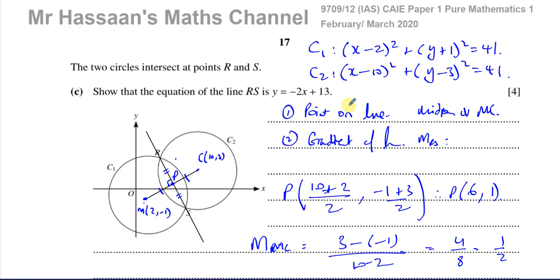That completes this paper, the February-March 2020 International A-Level Cambridge 9709 exam. Other questions from this paper can be found in the playlist. This question also relates to straight line graphs, so it will be added to both the equations of circles and straight line graphs playlists. Subscribe to the channel and thank you for watching.